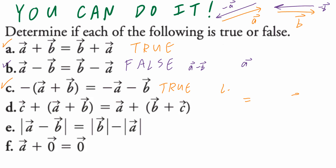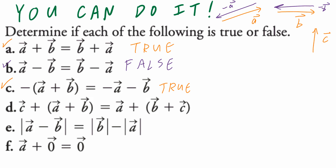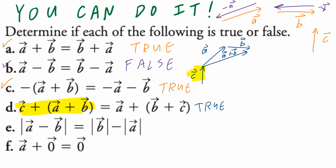Welcome back, everybody. In part D, we're looking at vector C, so we're going to add a third vector. Vector C plus, open bracket, vector A plus vector B, close bracket, equals vector A plus, open bracket, vector B plus vector C — this is going to be true. On the left-hand side, I'm starting with vector C, plus A plus B, where A plus B looks something like this. So the entire expression C plus A plus B gives you the resultant vector.